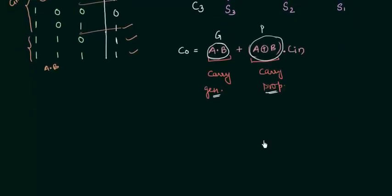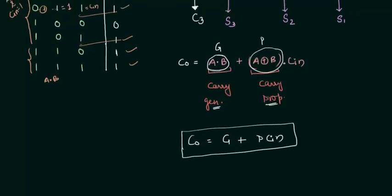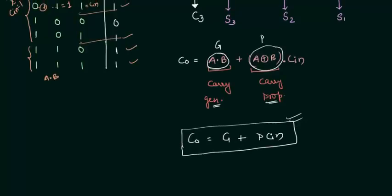So how I can write this thing? Co is equal to G or P Cin. So we have stepped into the process of predicting our carry output once we are having this equation.